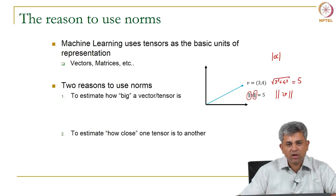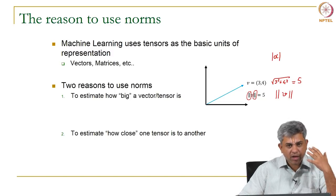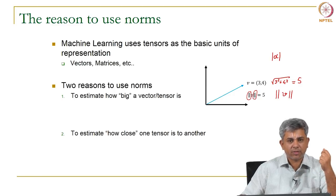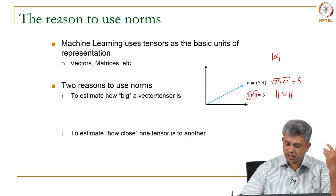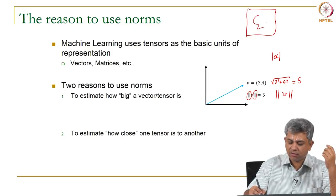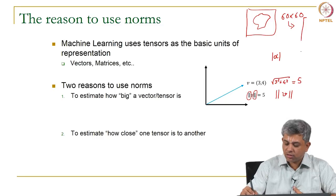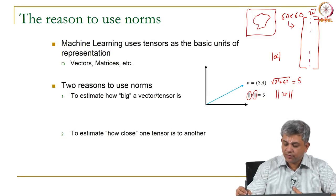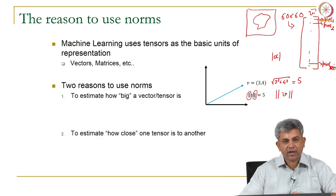There is another reason for which we use norms, which is to estimate how close one vector or tensor is to another. Think about the idea of images: if you recall what we did in the previous videos, we had an image of a cat — say a 60 by 60 image. We saw that this can be unrolled into a single vector of size 3600, where each element represents one pixel. So it can be written as a vector of dimension 3600.